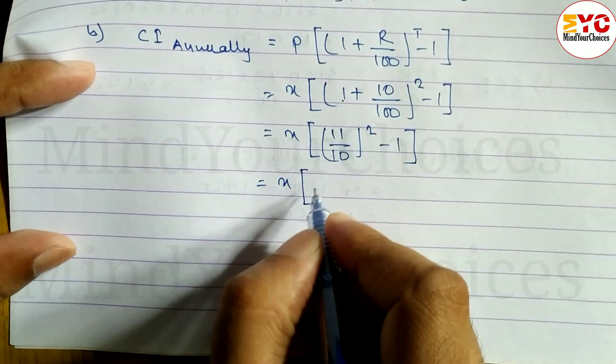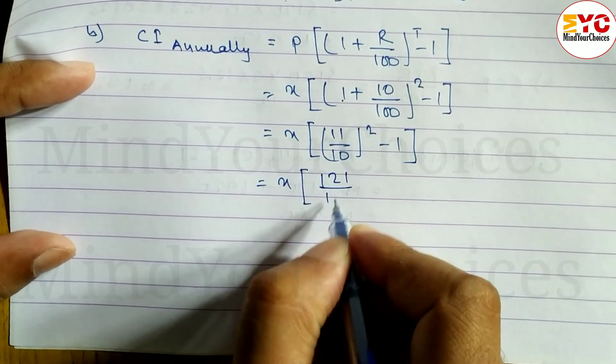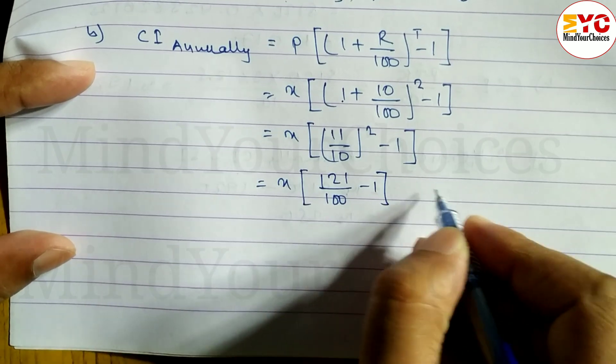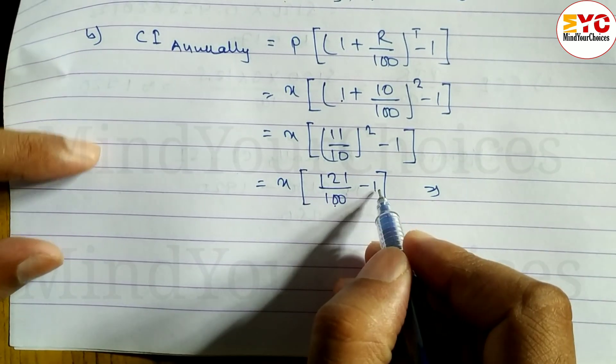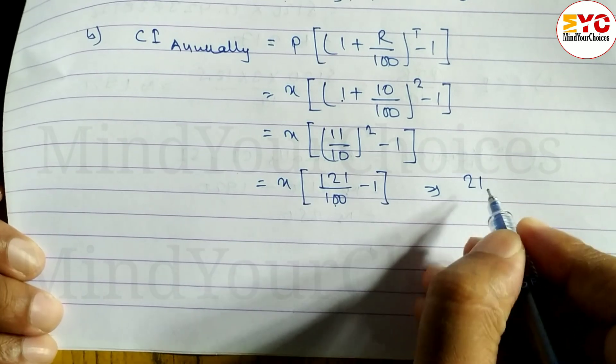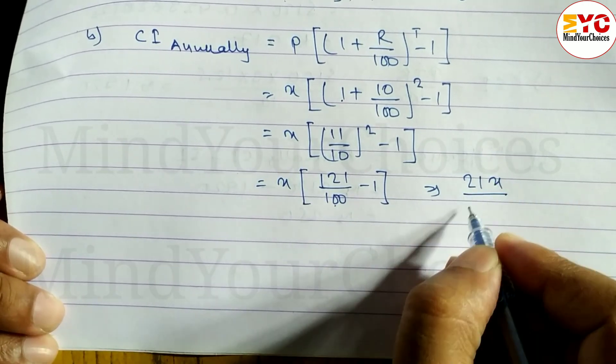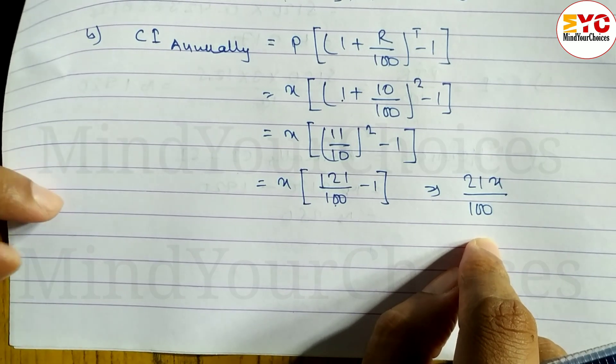x times 11 square is 121 divided by 100 minus 1. Calculate: 121 minus 100 is 21.